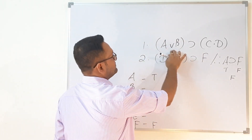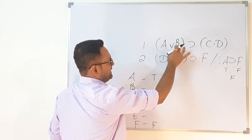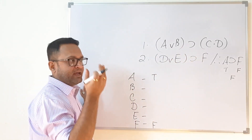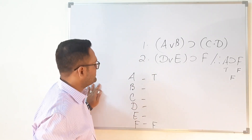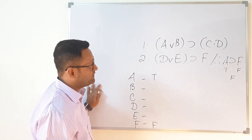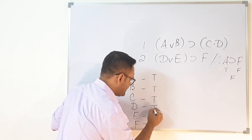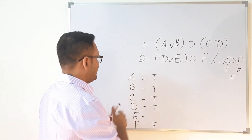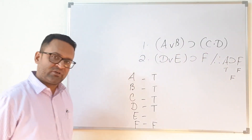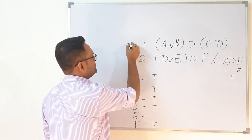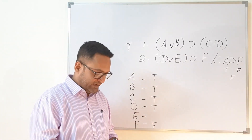Since a is true, a∨b is true regardless of b's value, so the first premise (a∨b) → (c·d) requires c·d to be true, meaning both c = true and d = true. Setting b = true as well, the first premise becomes true → true, which is true. So the first premise is satisfied.